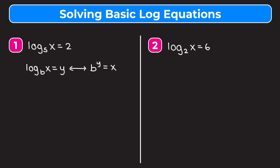In number one we're solving for the input of our log, so we want to change it into exponential form. The base of our log is 5, so that becomes the base of our exponent. We raise that to the second power and set it equal to x. So x equals 5 squared, and 5 squared is 25. Therefore x is equal to 25.